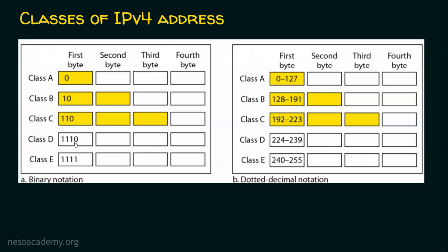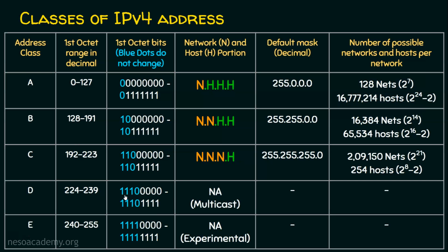For Class D, the IP address starts with 1,1,1,0, so those four bits are fixed, leaving only four bits remaining. The starting value is 1110 0000, which is 224 in decimal, and the ending is 1110 1111, which is 239 in decimal. So Class D ranges from 224 to 239.